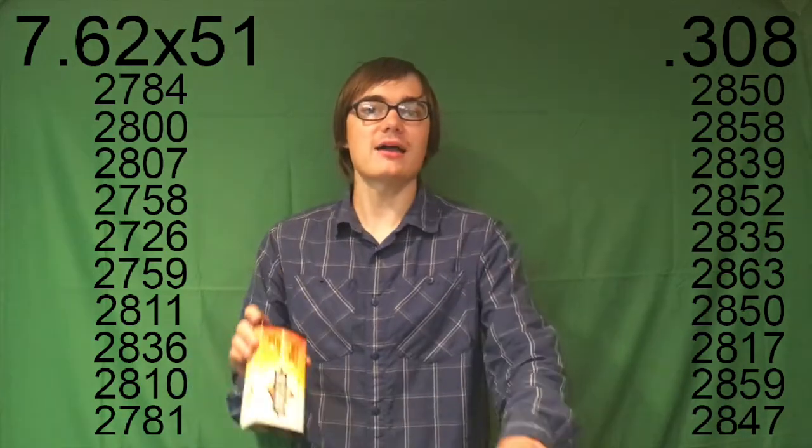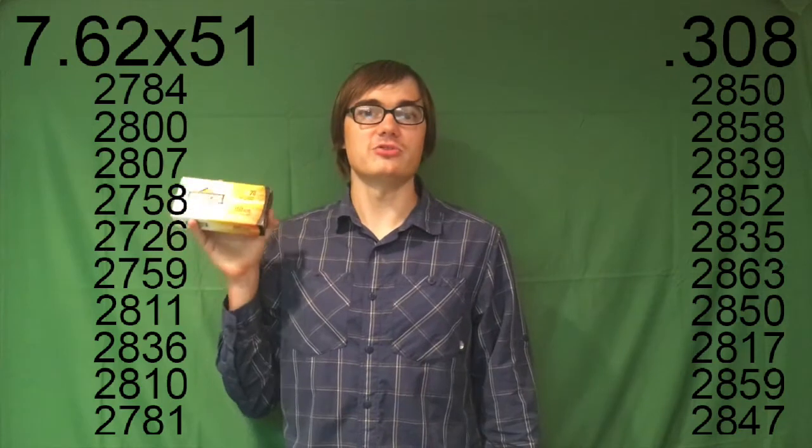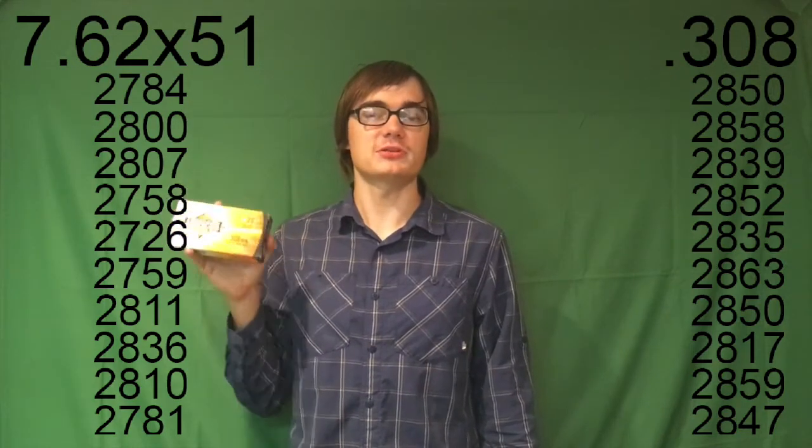Now, the velocity high for the Armscore ammo was 2,863, which is 27 feet per second higher than the Magtech ammo. So, from the velocities alone, if this ammo is unsafe to shoot because of that 60.2 feet per second higher average, then that would mean that this Magtech ammo is not safe to shoot because those numbers are fairly close.